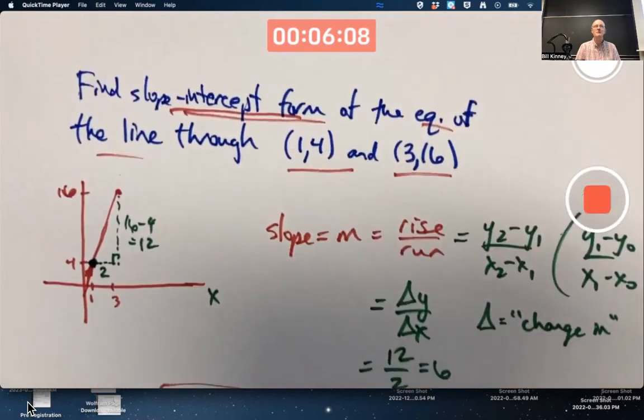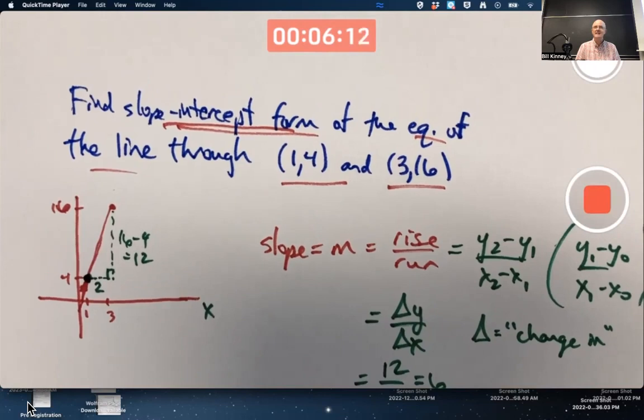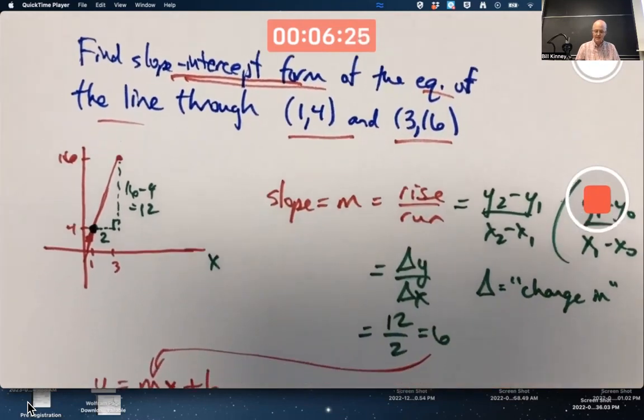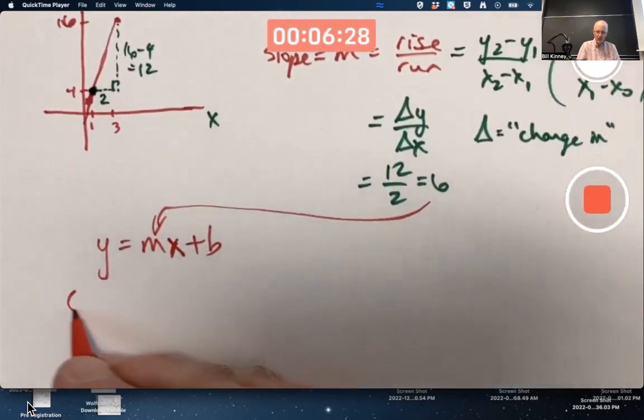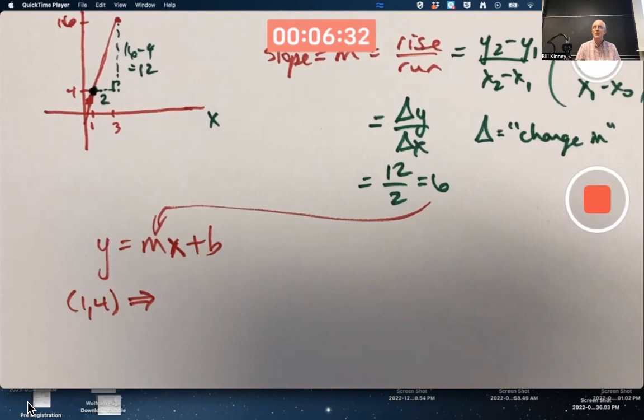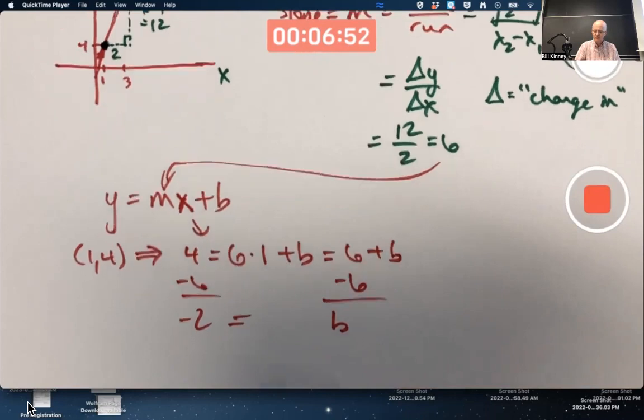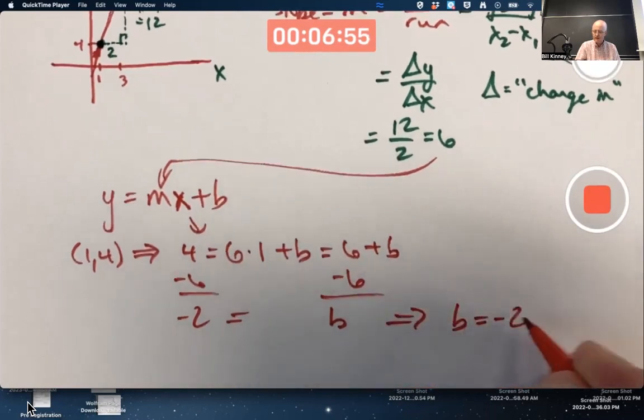Doesn't matter which point we use. Let's try using both of them and see if we get the same thing. If I use the point 1,4, when x is 1, y is 4, I substitute: replace y with 4, replace the slope with 6, replace x with 1, solve for b. Subtract 6 from both sides to isolate b. You get b is negative 2.